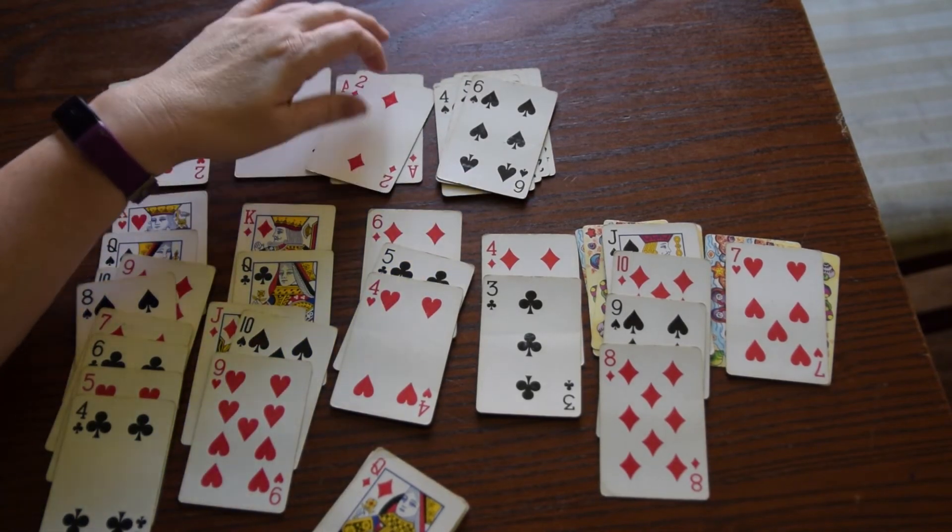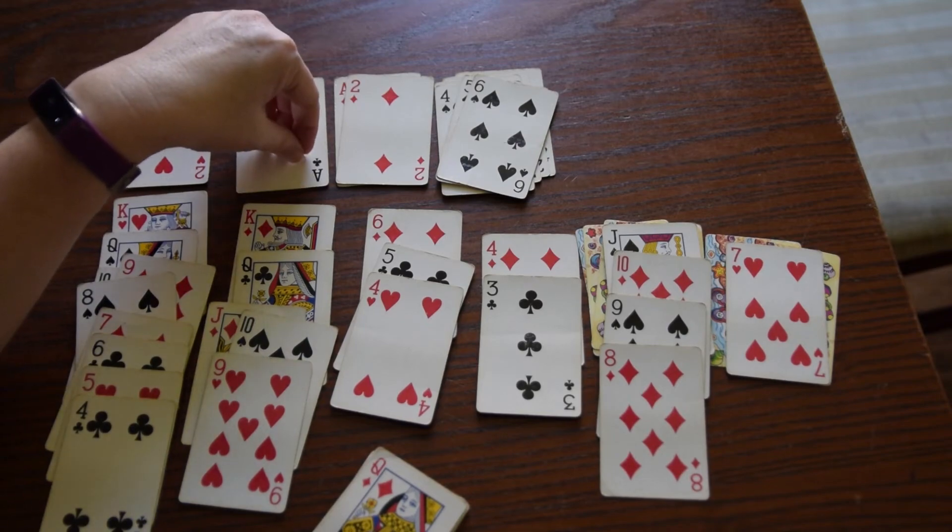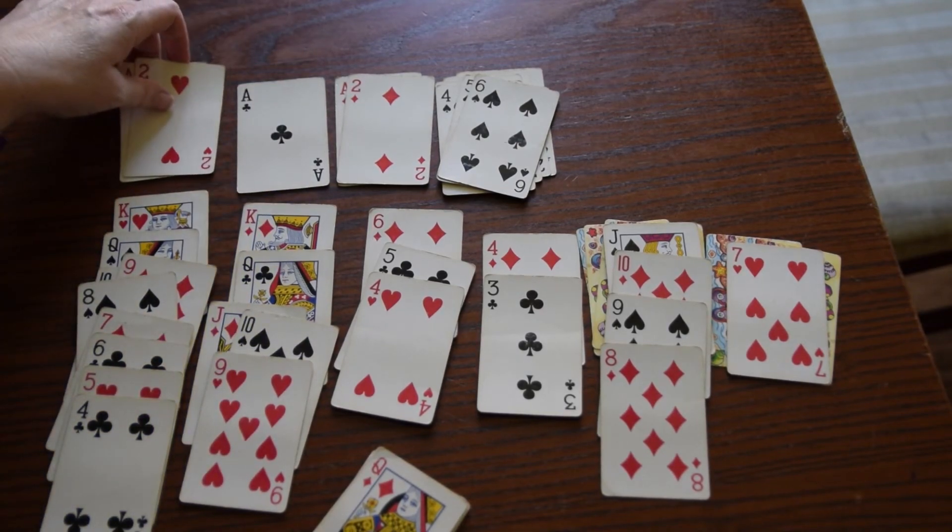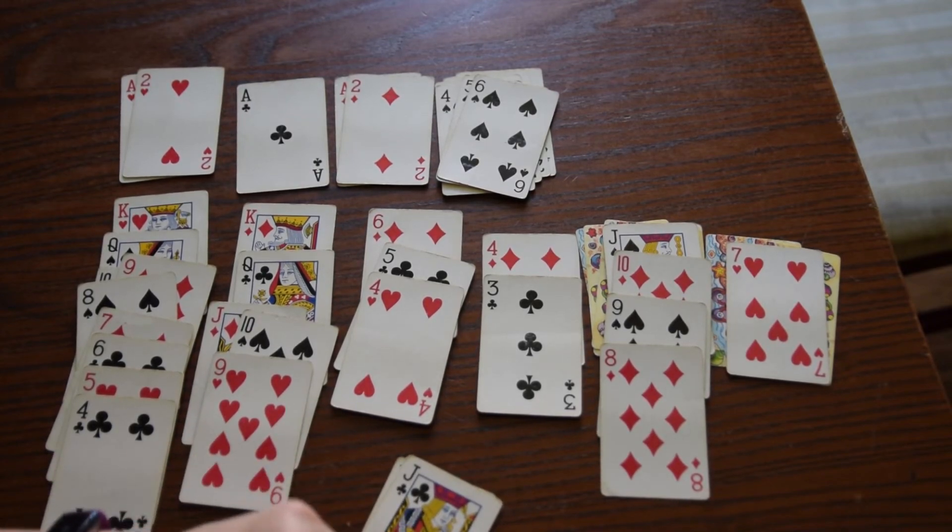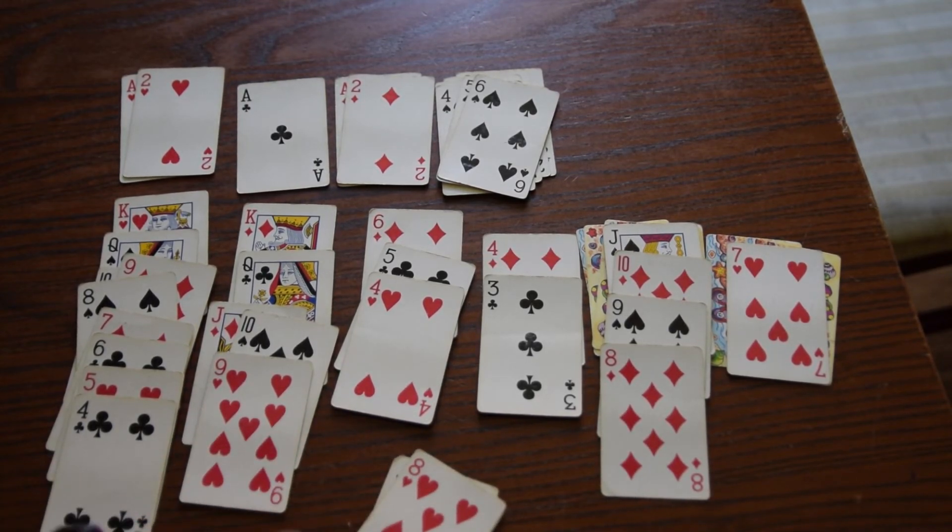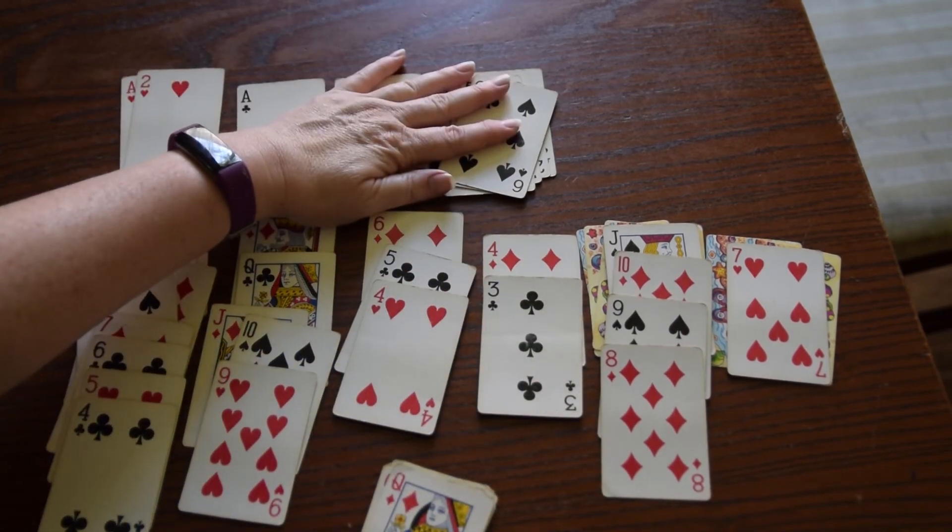Three of diamonds. Two of clubs or a three of hearts. And I think I've lost the game. Basically you win if you get all these cards up to here. And that's how you play solitaire.